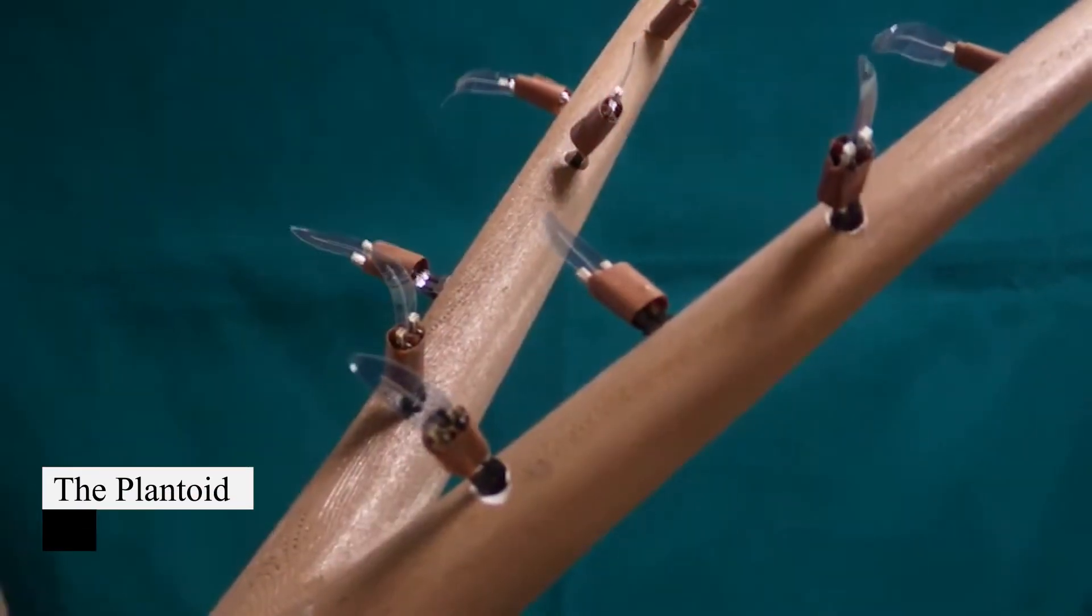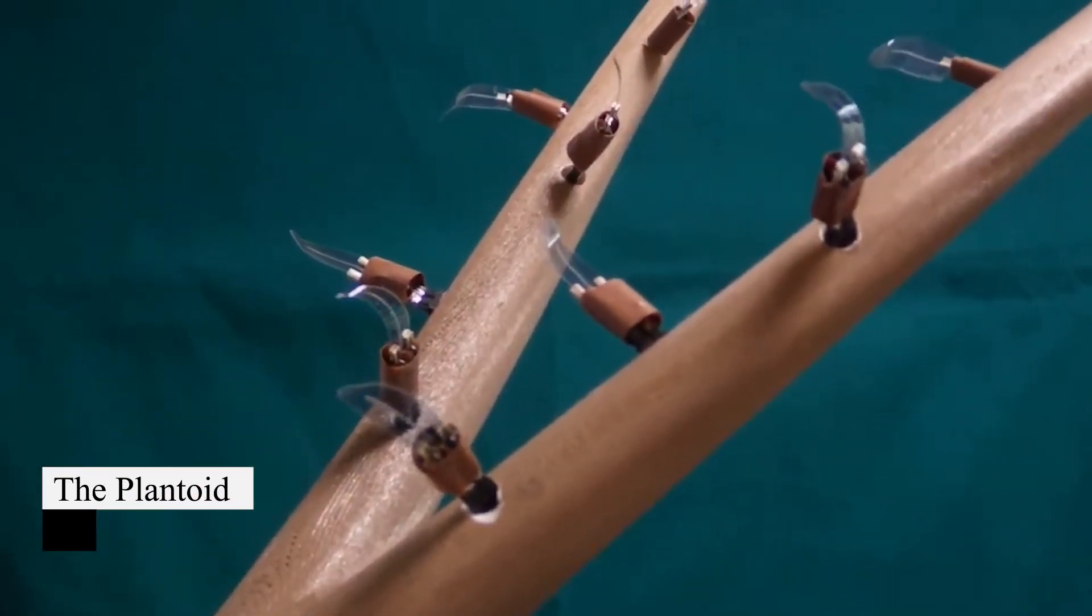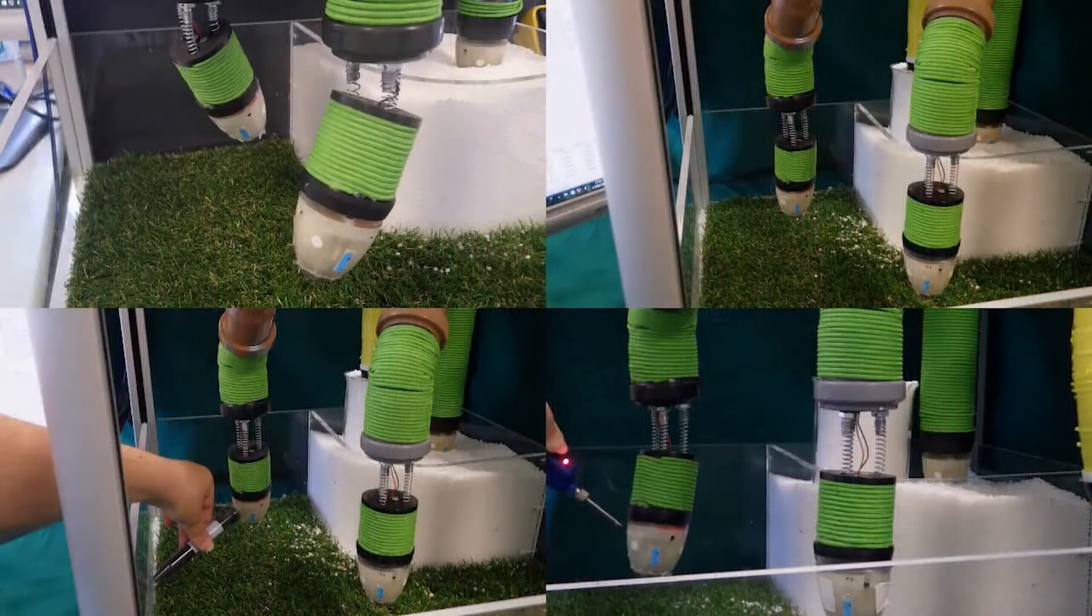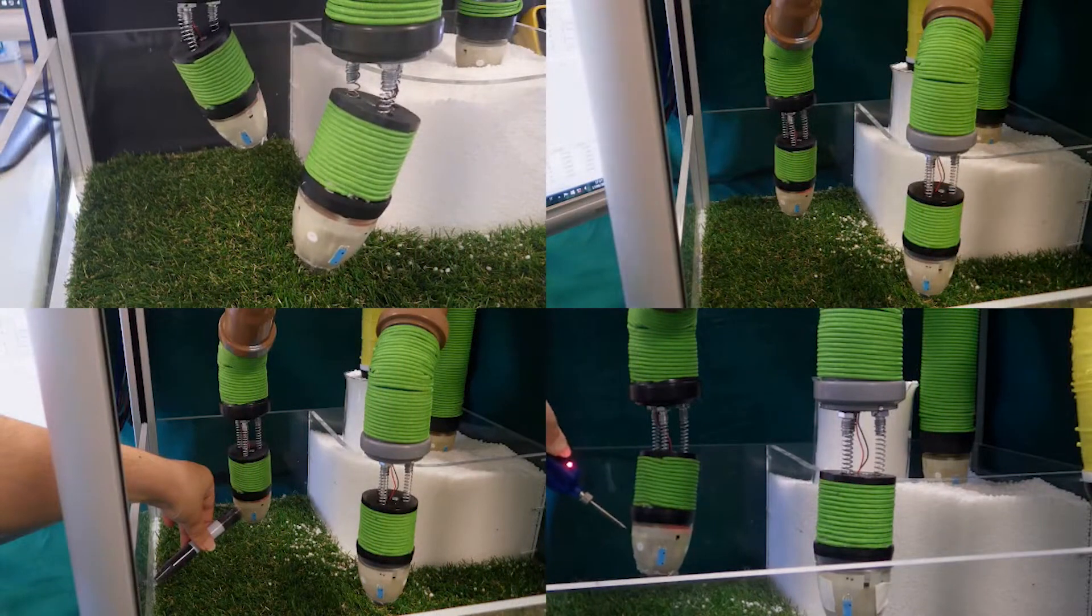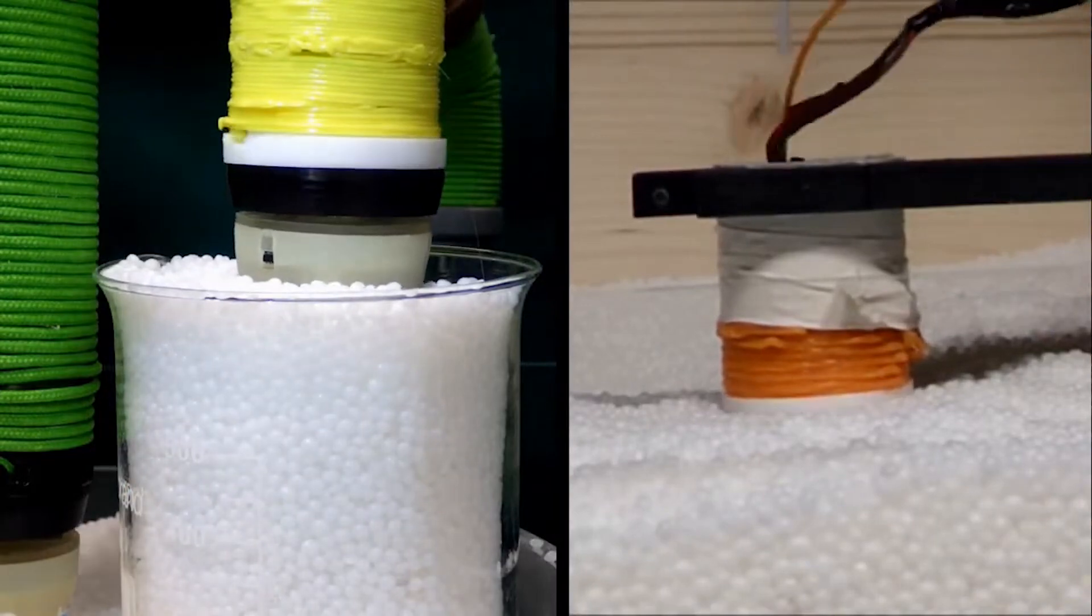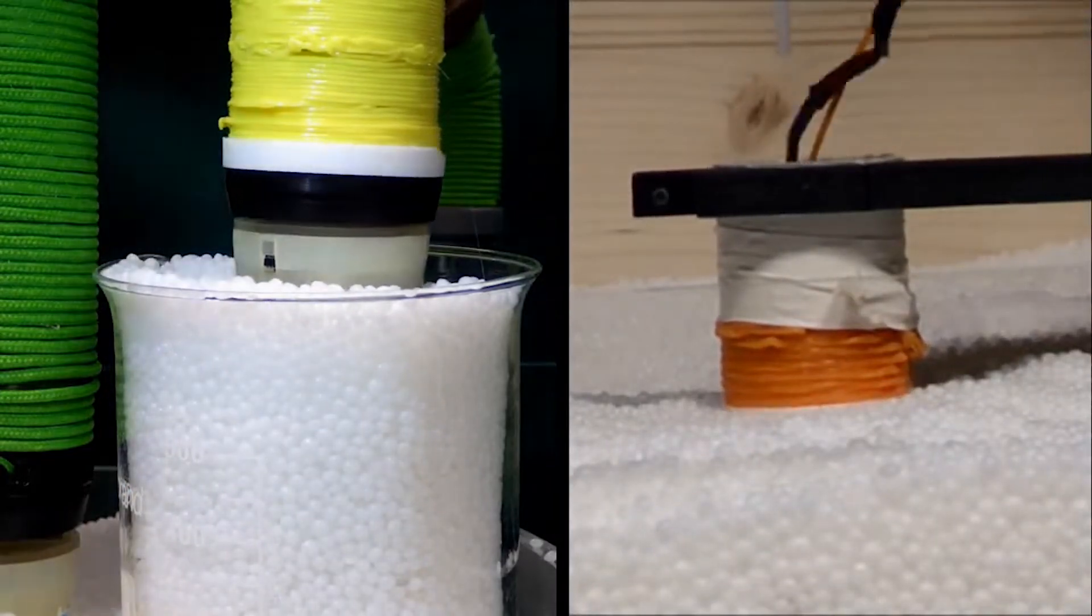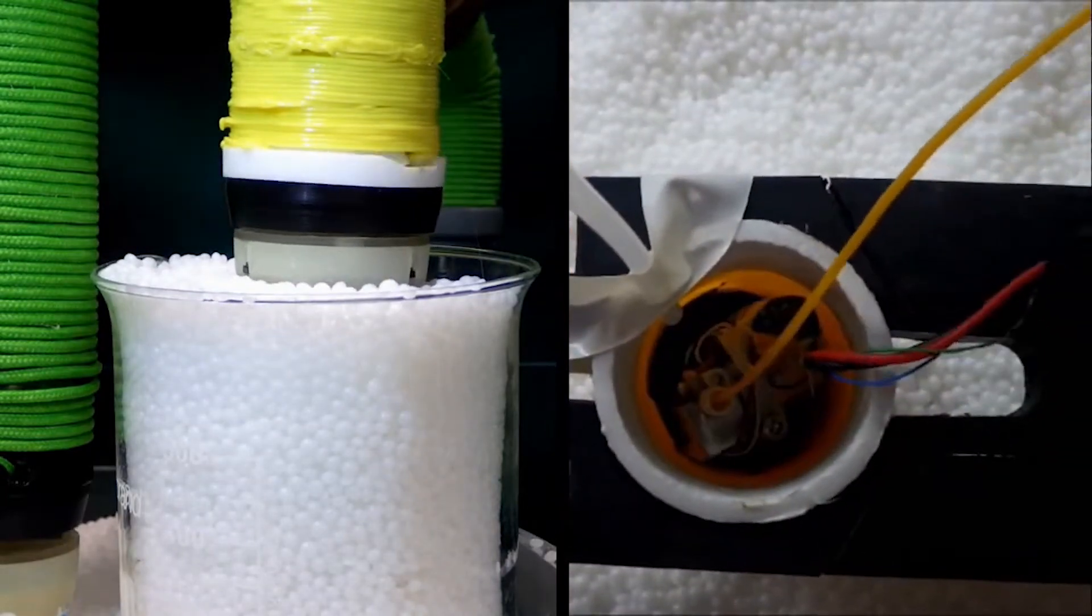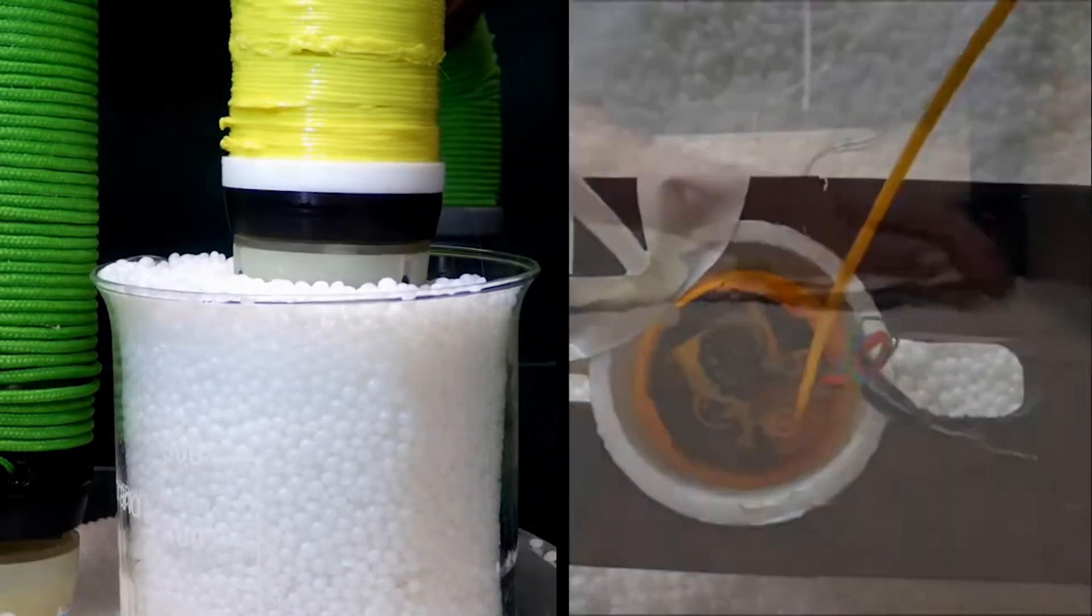The PLANTOID, grown with miniaturized 3D printers, mimics plant roots and autonomously explores its environment using sensorized probes. Information on air, food, water, and soil quality is transmitted to an operator. The ultimate goal is for the PLANTOID to self-correct detected issues.